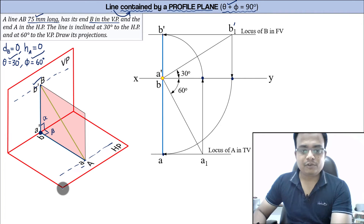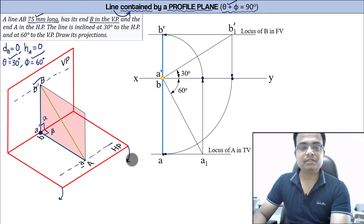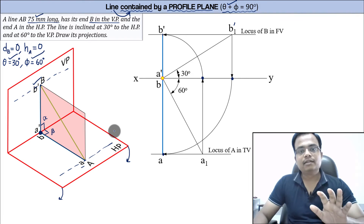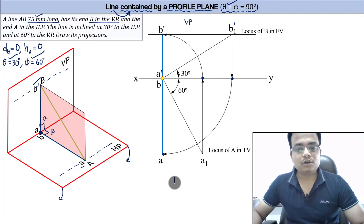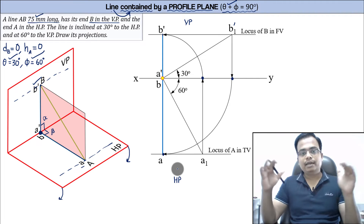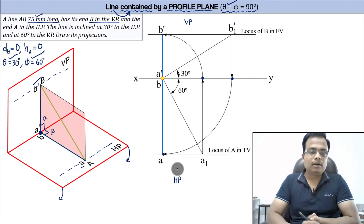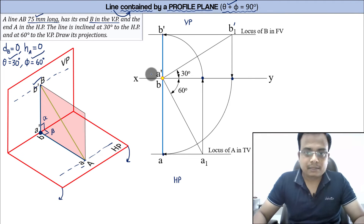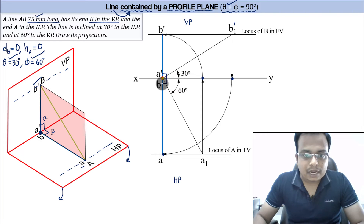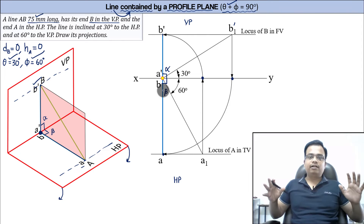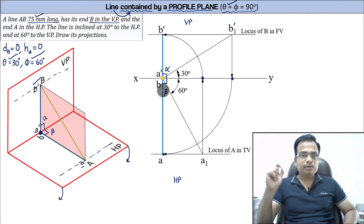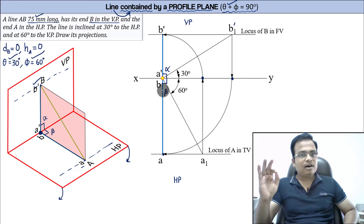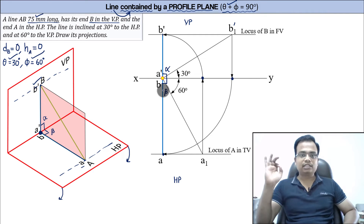Now join the points. If you rotate the horizontal plane clockwise, the two planes become coplanar, allowing you to draw this on a flat sheet of paper. The vertical plane is above XY and the horizontal plane is below XY — that's the protocol of first-angle projection. You can clearly see that the angle here is alpha equals 90 degrees and this is beta equals 90 degrees. So whenever a line is contained by a profile plane: theta plus phi equals 90 degrees, and alpha equals beta equals 90 degrees.